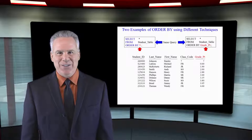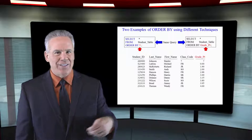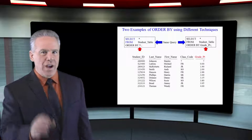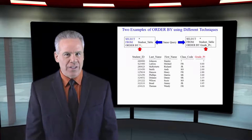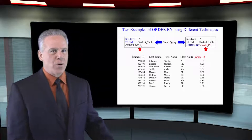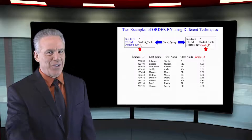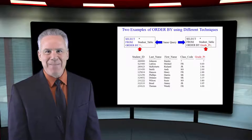Take a look at these two queries. One says SELECT * FROM student table, ORDER BY 5. The other says SELECT * FROM student table, ORDER BY grade point. Are those the same exact queries? Will they have the same performance? Absolutely — it doesn't matter if you sort by the column name or use the number it's associated with. It's the same meaning.